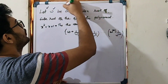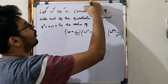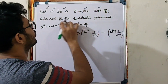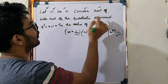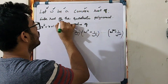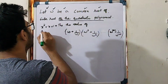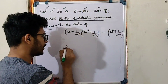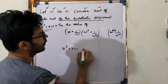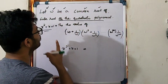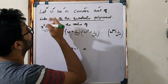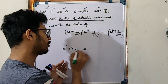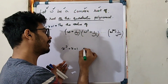Let omega be a complex root of the cube root of unity. I will show you how to write the quadratic equation x² plus x plus 1, and how to find the cube root of omega.